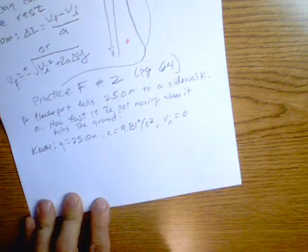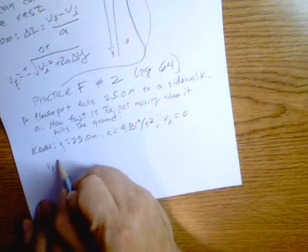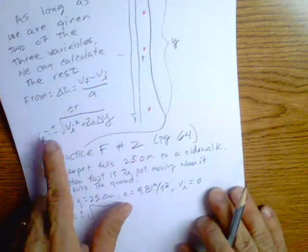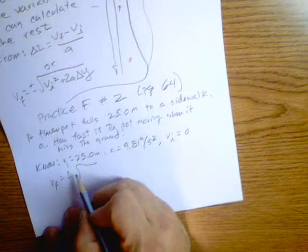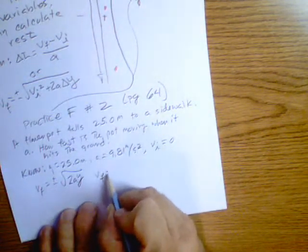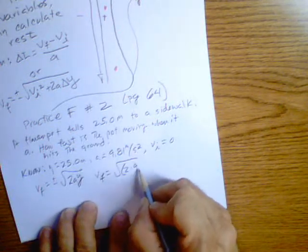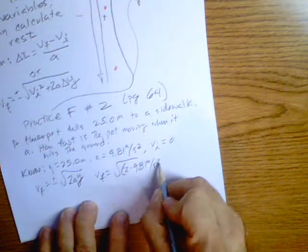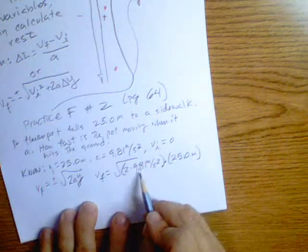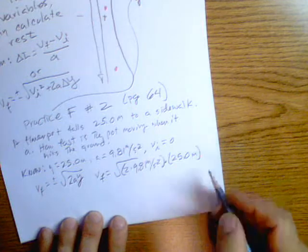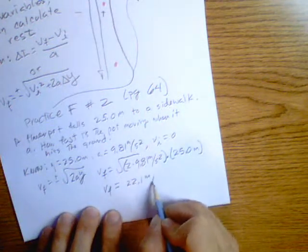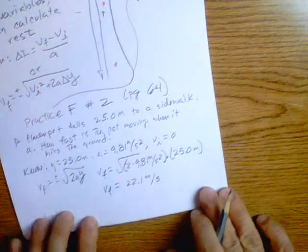So, we need to know how fast it's moving. We need to know velocity. Velocity final is plus or minus the square root. And because velocity initial is zero, we'll just take the square root of 2 A Y. So, velocity final equals the square root of 2 times the acceleration, 9.81 meters per second squared times 25.0 meters. 25.0 meters is important because we have to watch our sig figs. So, velocity final is 22.1 meters per second. We have three sig figs, we're good. 22.1 meters per second.